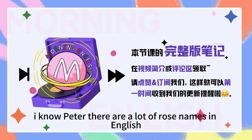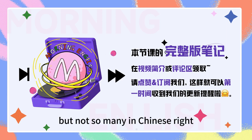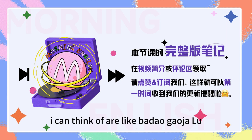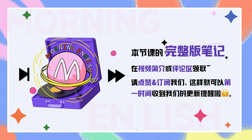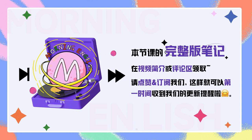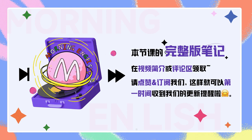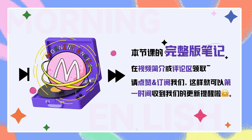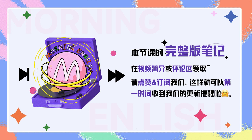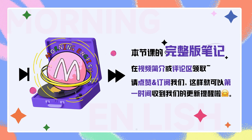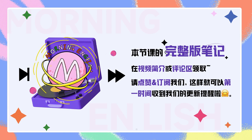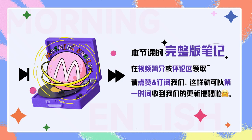I know, Peter, there are a lot of road names in English, but not so many in Chinese, right? That's right. The only ones I can think of are like 大道、高架、路、巷. 嗯, yeah, that's where I kind of live. But in English, there are a whole lot more ways to say road and streets, and I'm going to try and explain them to you. 嗯, 你的中文词汇量还是 very, very good. 哪里哪里。